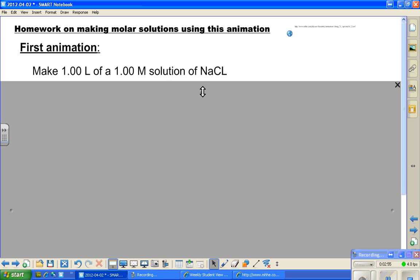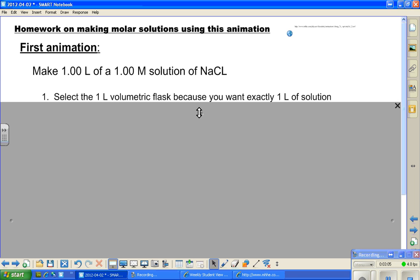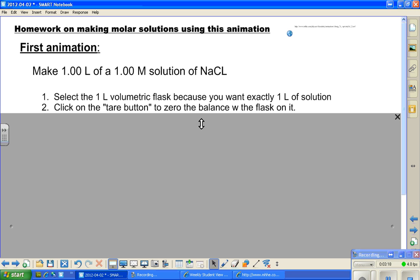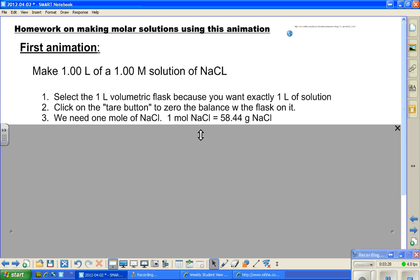In the first animation, I clicked on the make 1.00 liter of a 1.00 molar solution of sodium chloride, so I have to write that down. The first thing we did was select the 1.00 liter volumetric flask because you want exactly 1.00 liter of solution. Next, we want to click on the tare button that will zero the balance with the flask on it. Then we need to make one mole of sodium chloride, so we have to figure out the molar mass. I want you to figure that out and show me how much the molar mass is of each of the solutions that you're going to be doing.